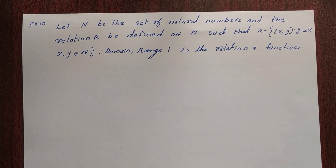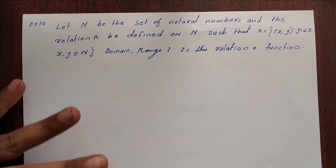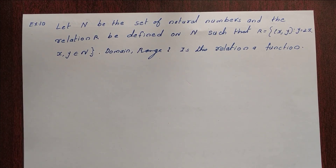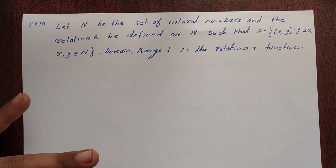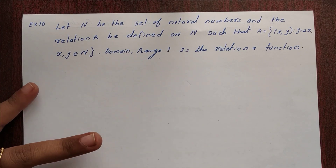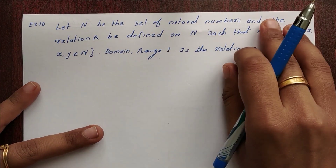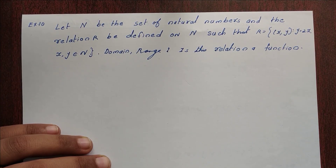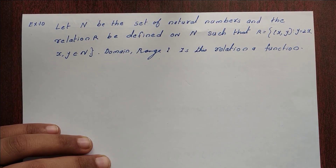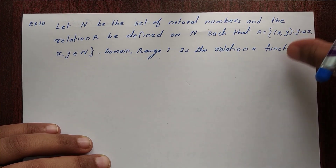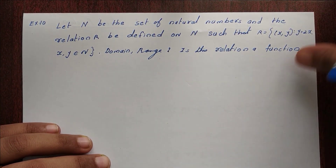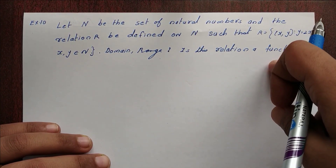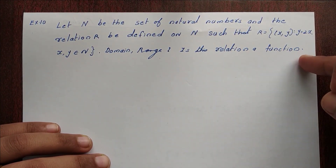Hi! What is the definition of a function? Every element in set A has one and only one image in set B. That is, set A maps all elements to set B.